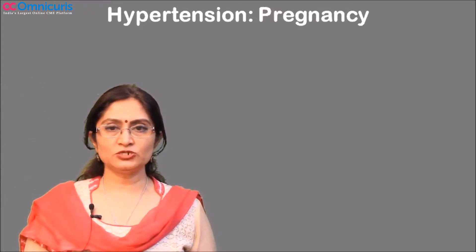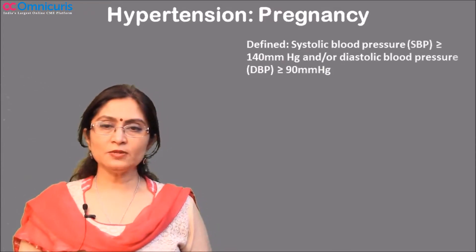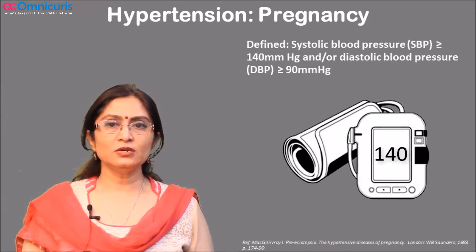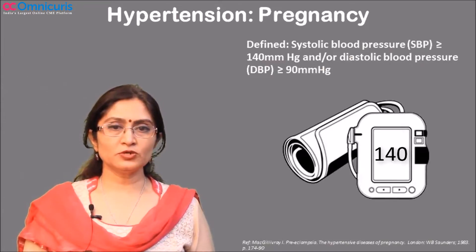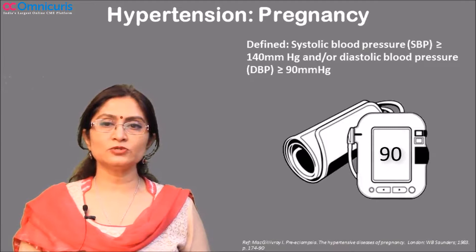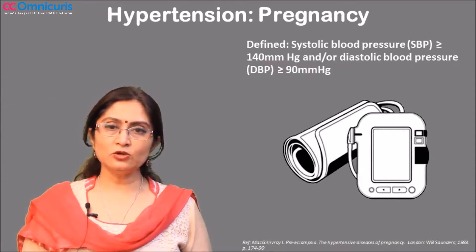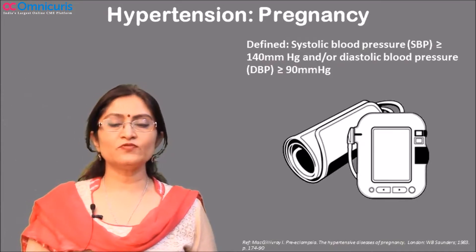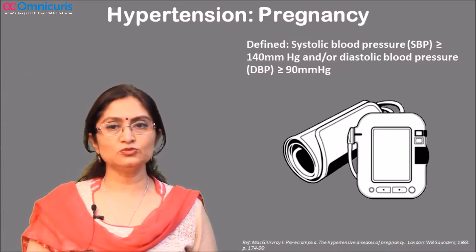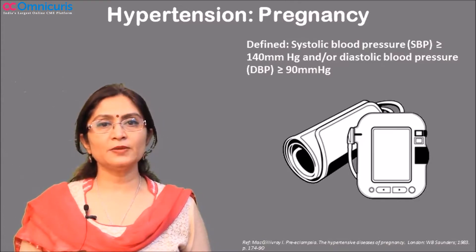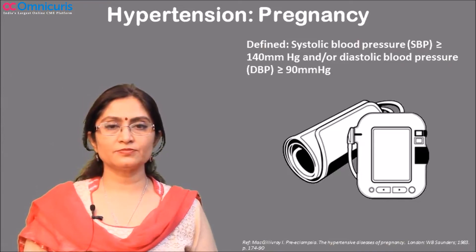When we look at the definition of hypertension in pregnancy: systolic blood pressure more than or equal to 140 mmHg, and/or diastolic blood pressure more than or equal to 90 mmHg, diagnosed anytime during pregnancy or within 42 days of delivery, is called hypertension in pregnancy.